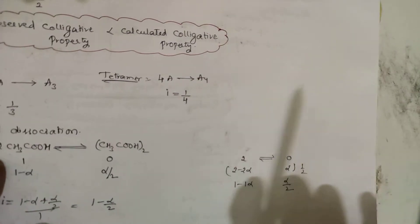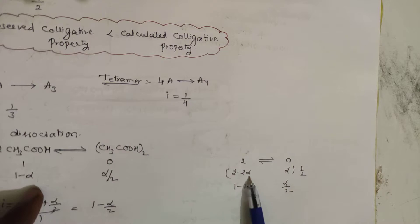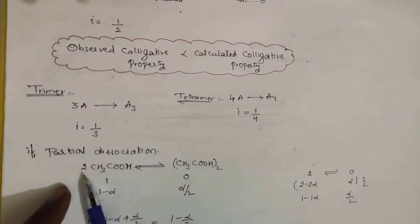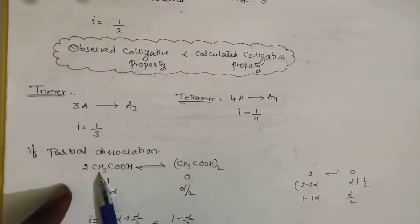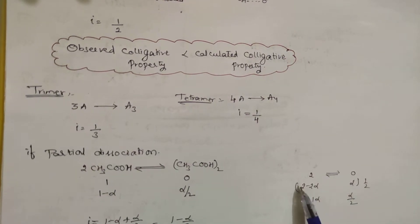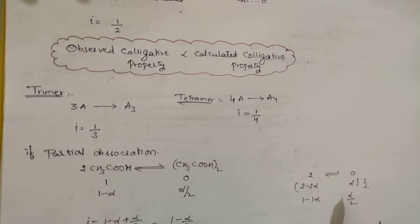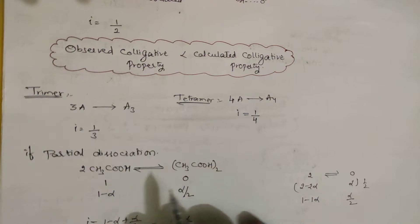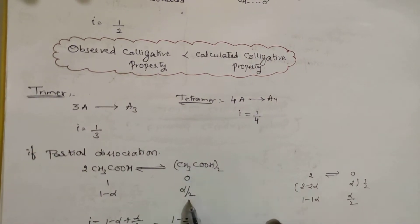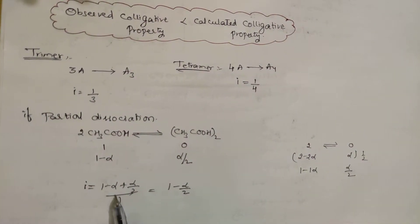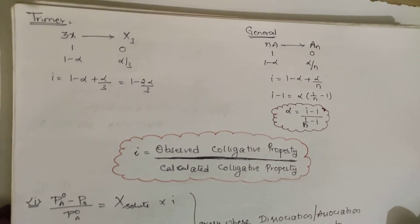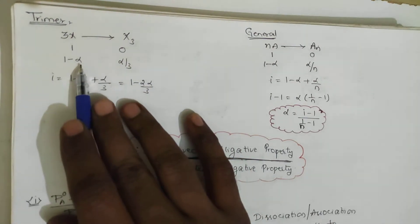For partial association of 2A ⇌ A₂: initially 1 mole (dividing by 2), after partial association remaining A = (1 - α), and A₂ formed = α/2. Total moles = (1 - α) + α/2 = 1 - α/2. So i = 1 - α/2.